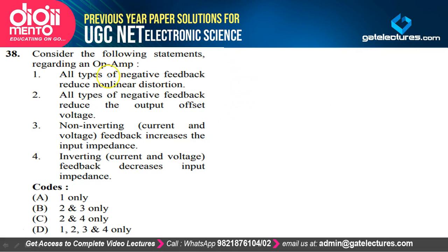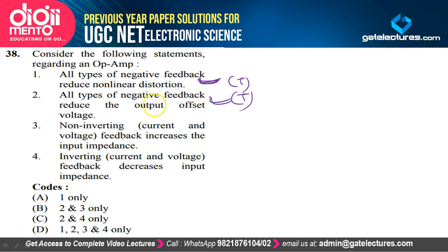Question 38: All types of negative feedback reduce non-linear distortion — true. All types of negative feedback reduce the output offset voltage (though cannot fully nullify it in practice) — true. Non-inverting feedback increases the input impedance — true. Inverting feedback decreases the input impedance — true. All statements are true, so option D is the correct option.